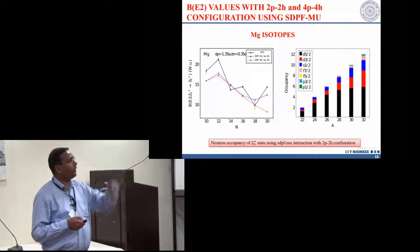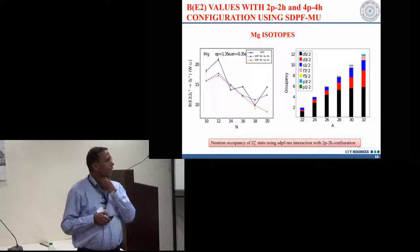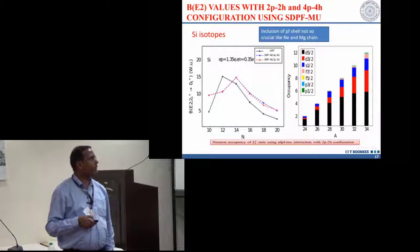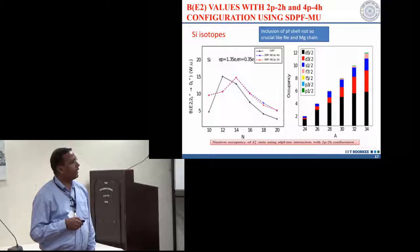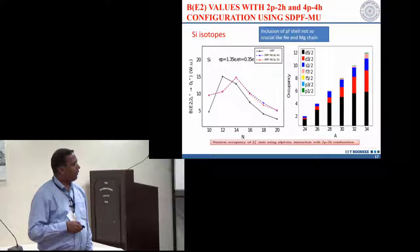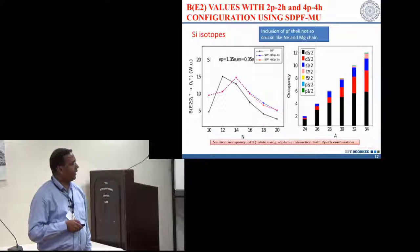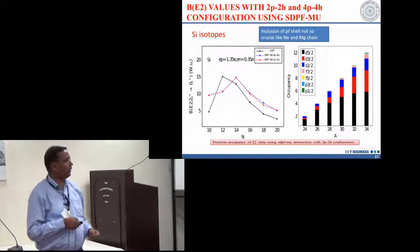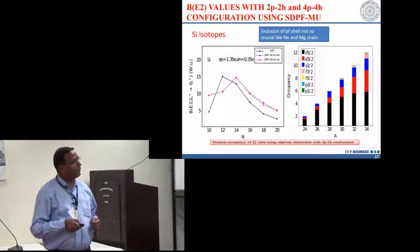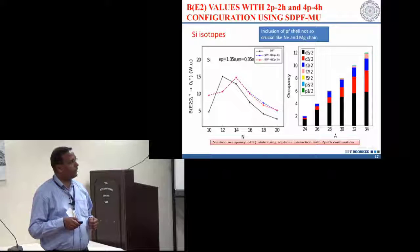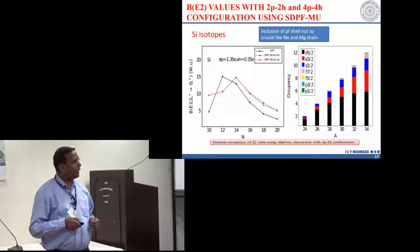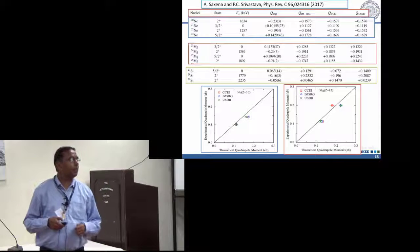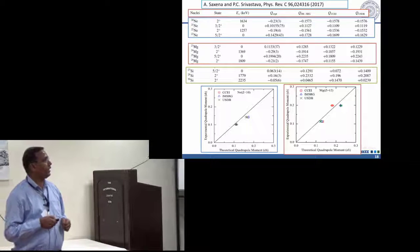We have included here two particle two hole and four particle four hole calculation. It means we have allowing four neutron from SD to PF shell. In the case of silicon isotopes, our result is slightly far here. It might be possible that inclusion of P shell is also crucial in the lower shell. Once you go heavier ones, the occupancy is going on increasing. But here, you can see that SD shell is enough.